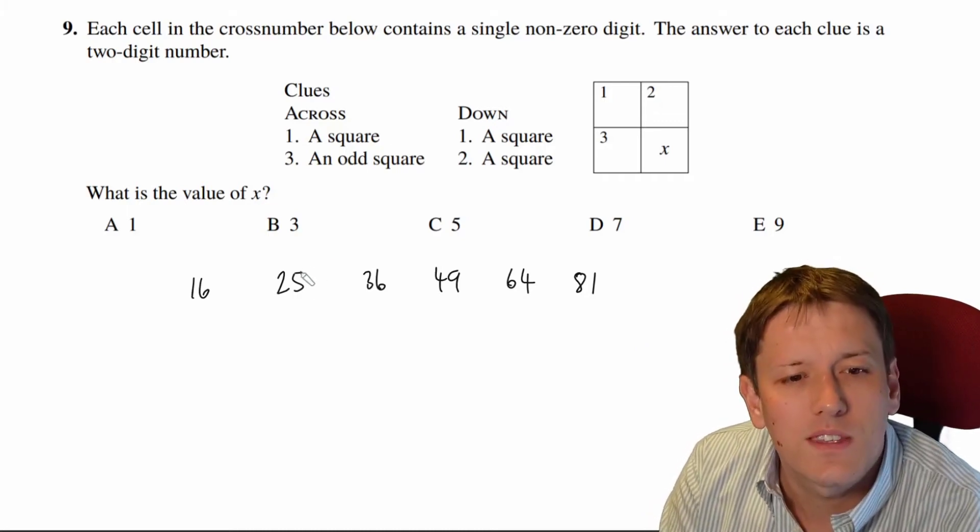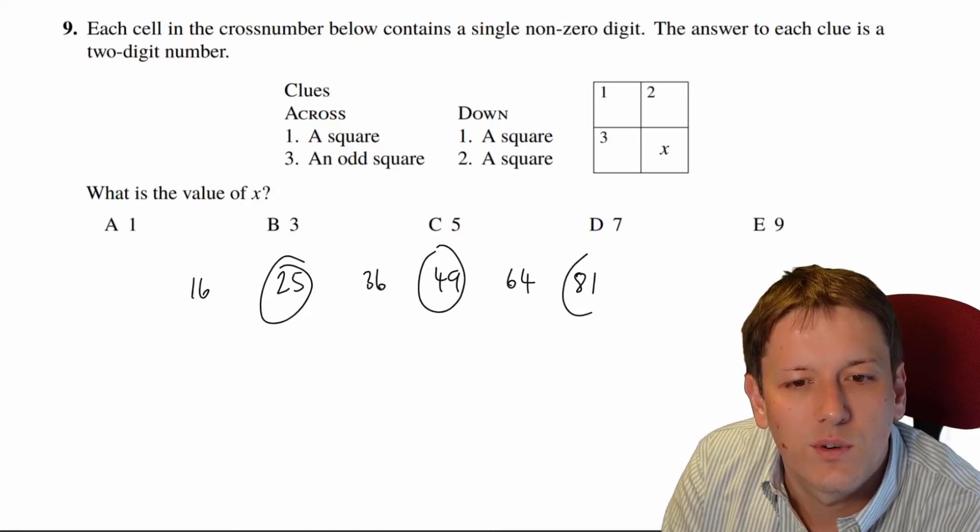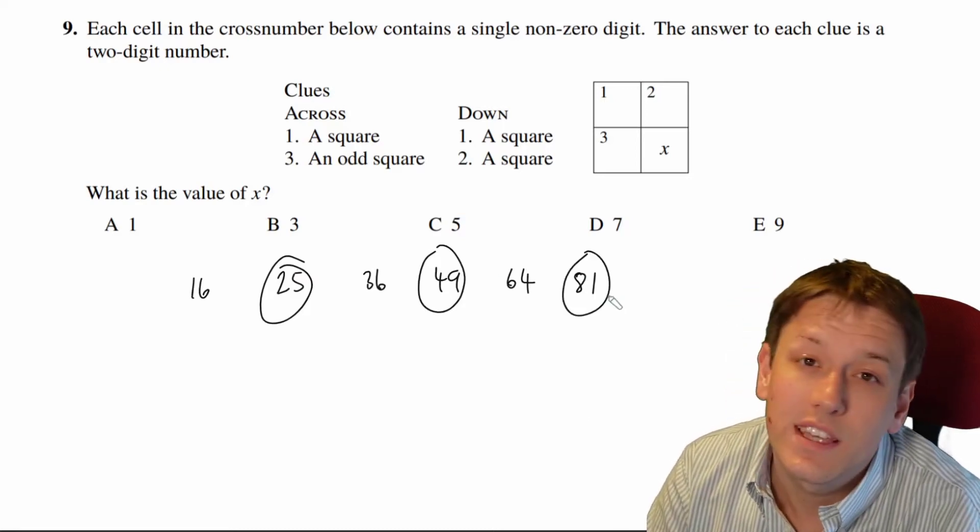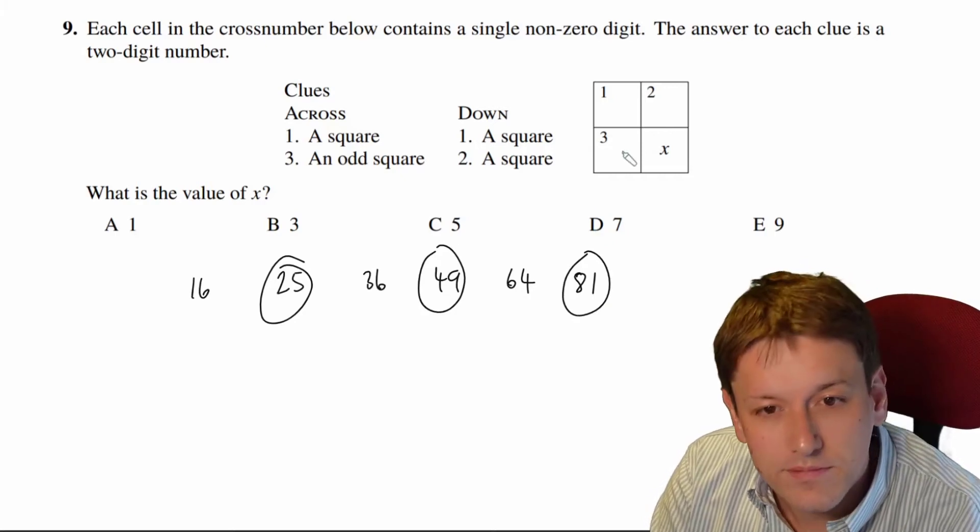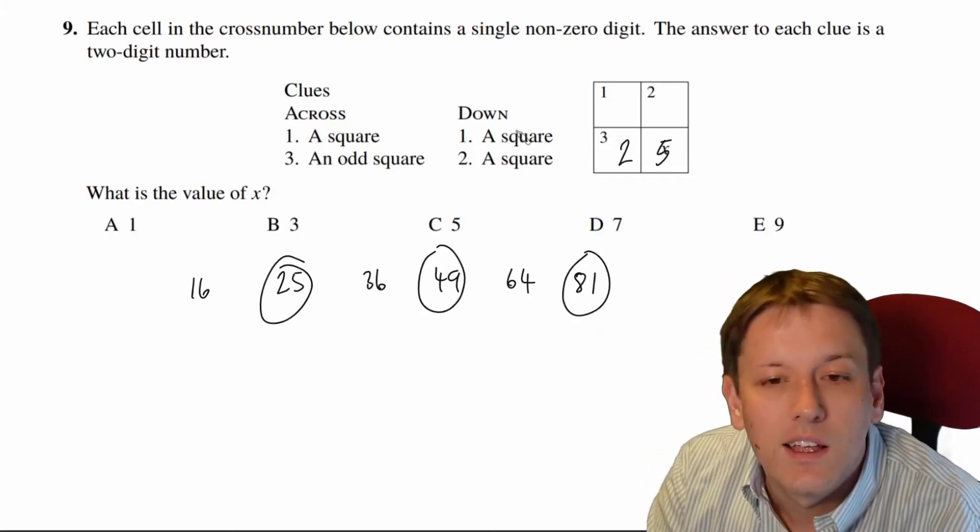And the only ones of these that are odd are 25, 49, and 81, so they're the only possible choices that we could put here for three across. Now if you think about 25, well...